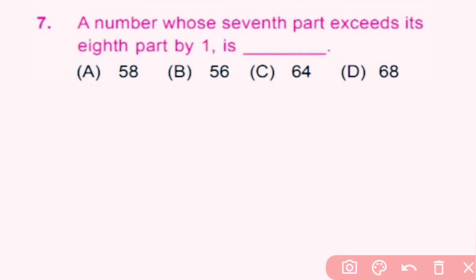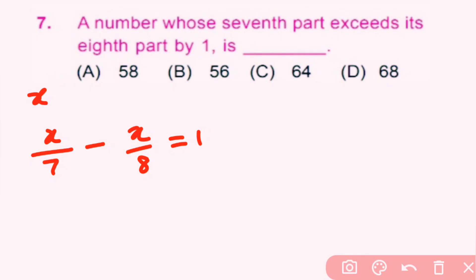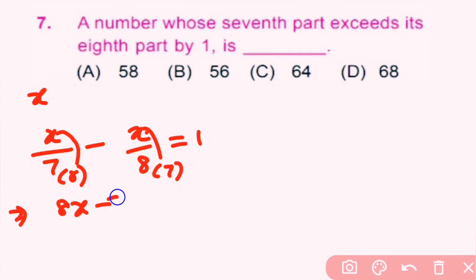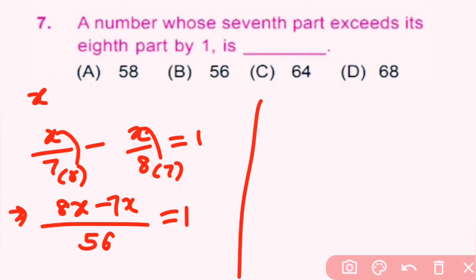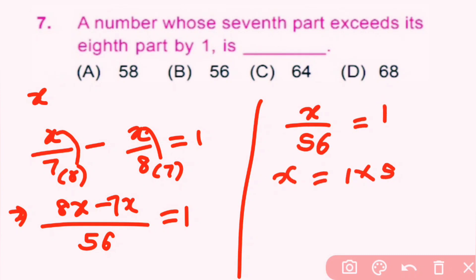Question number 7: a number whose 7th part exceeds its 8th part by 1. Let the number be x. Its 7th part is x/7 and its 8th part is x/8. So x/7 minus x/8 equals 1. Making denominators the same by multiplying by 8 and 7 respectively: (8x minus 7x)/56 equals 1, so x/56 equals 1, giving x equals 56. Answer b is correct.